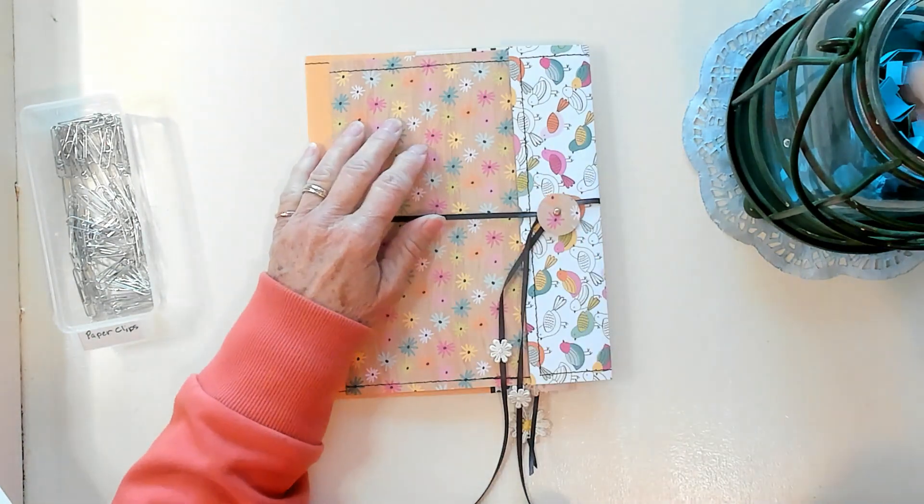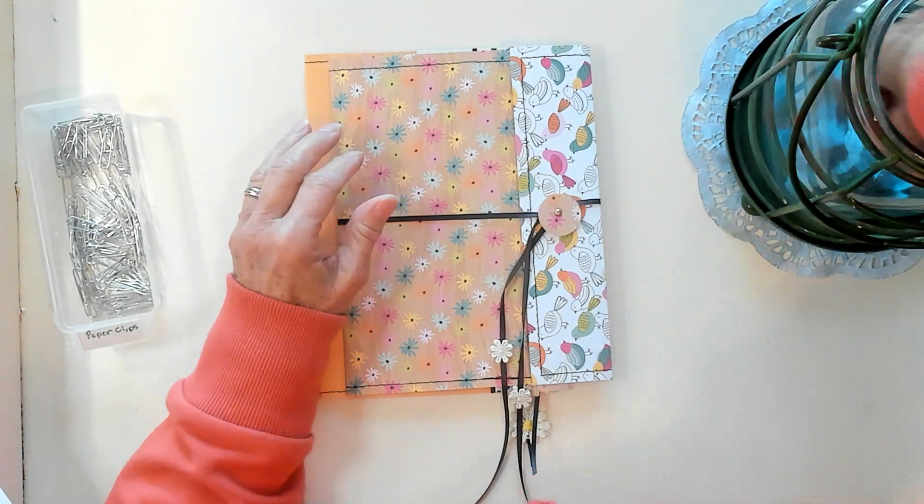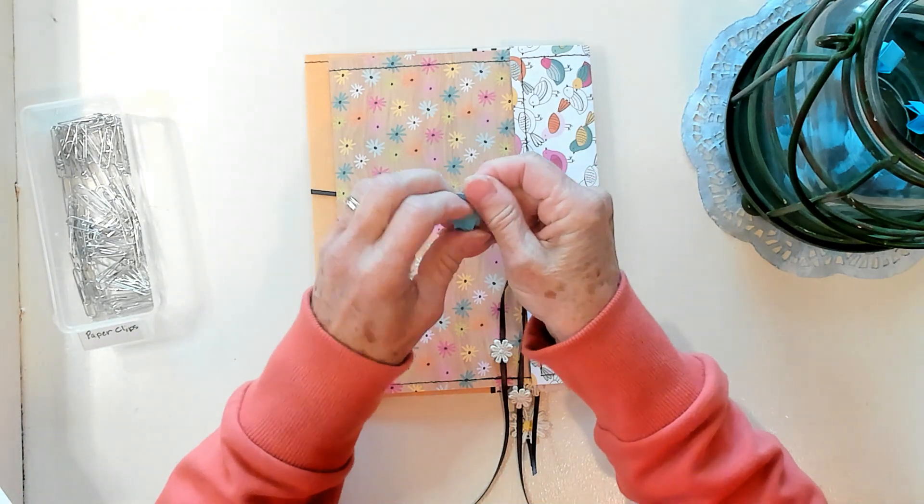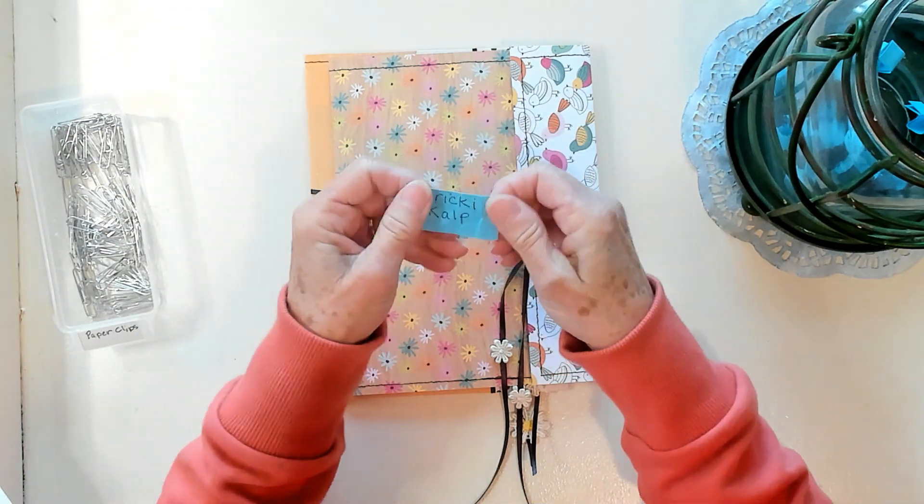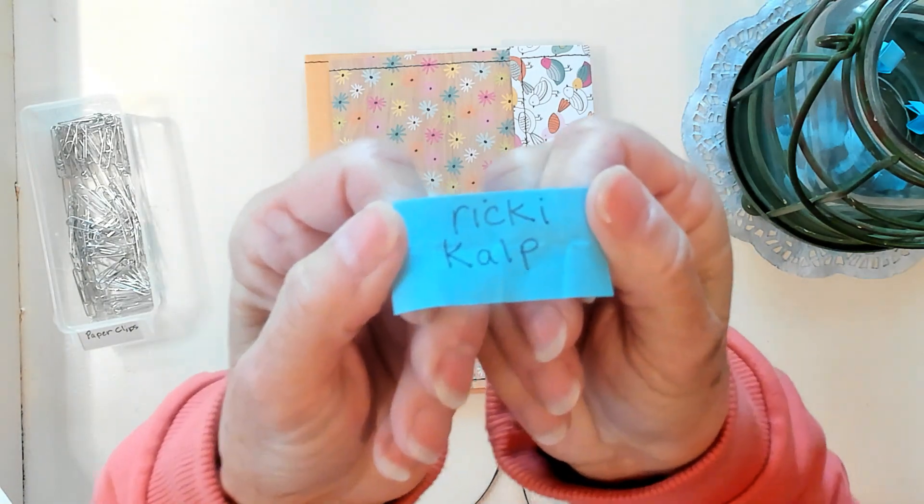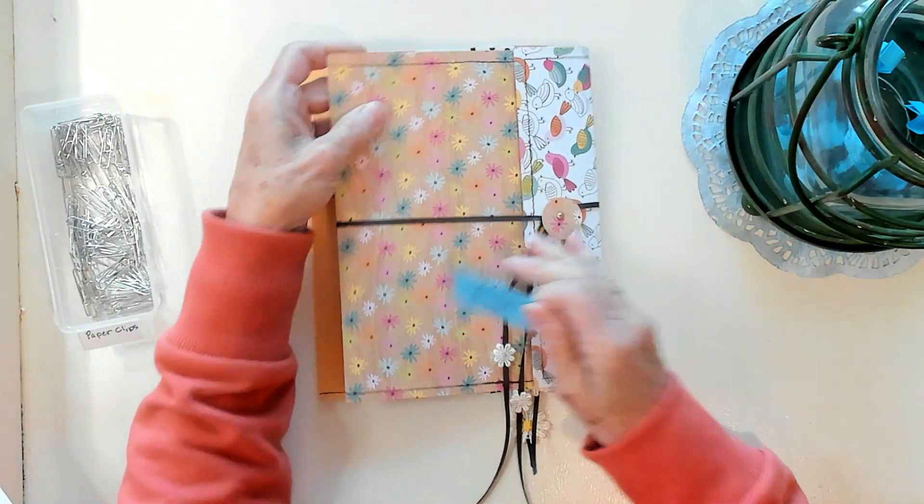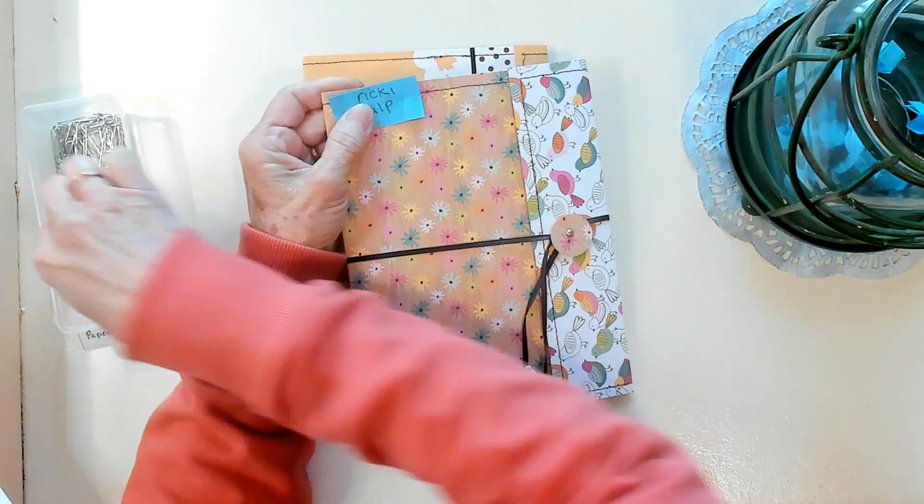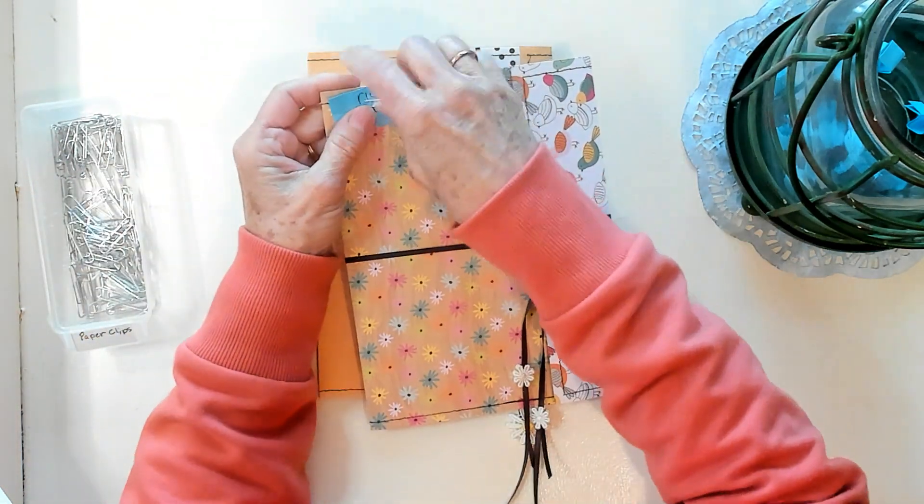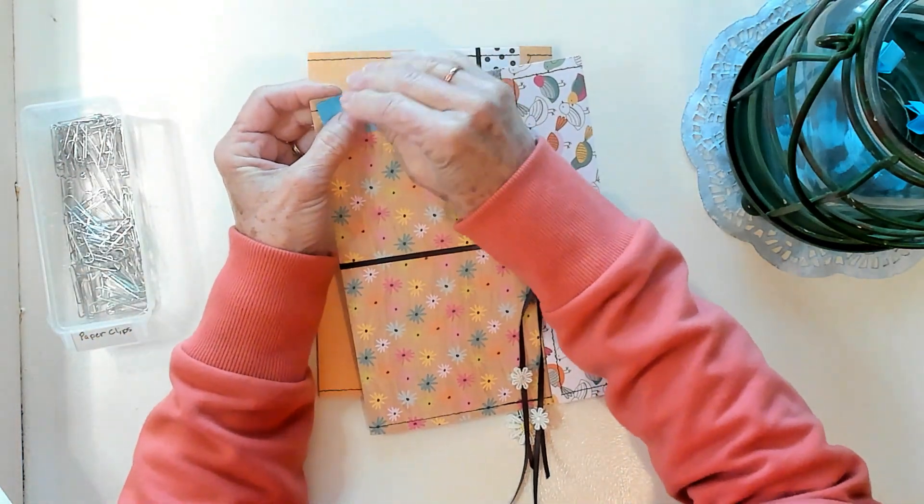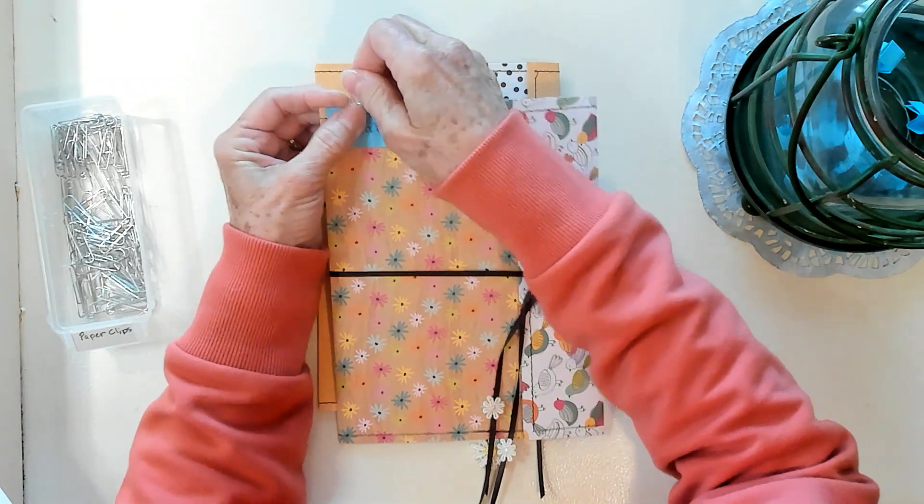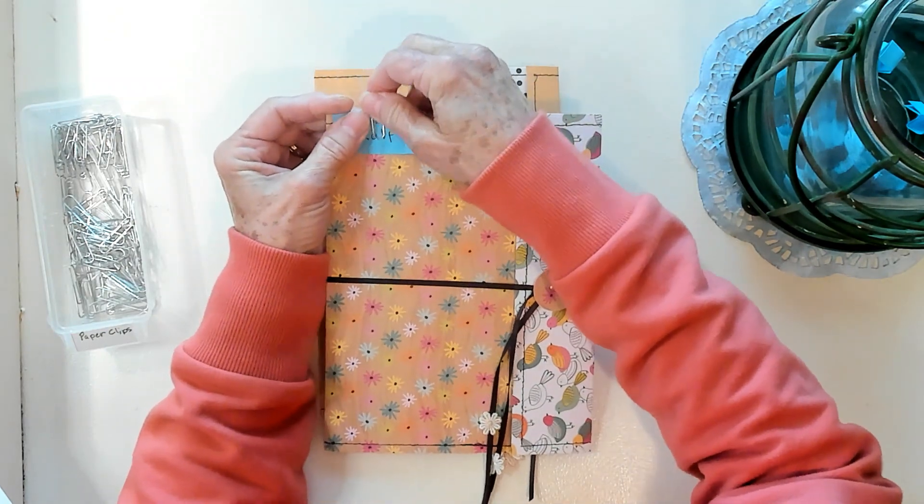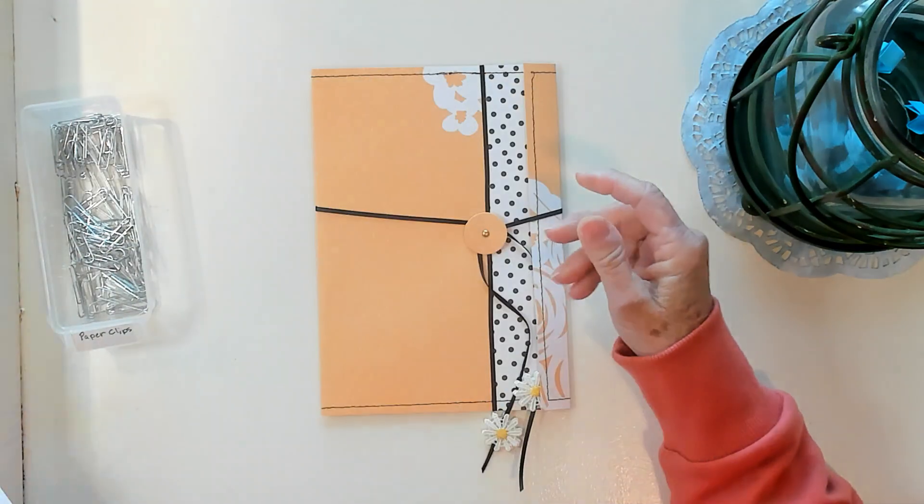Number nine. Number nine is Rikki Kelp. Rikki, you have won this little flowered one. Put that on there. I'll put it this way. Come on now. Get on there. There we go. Your name's right on there.